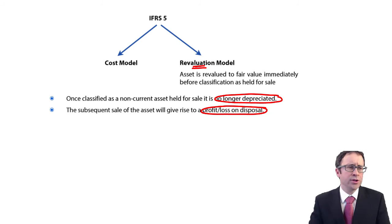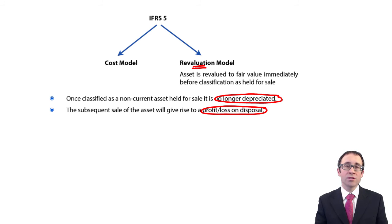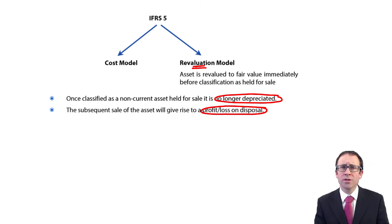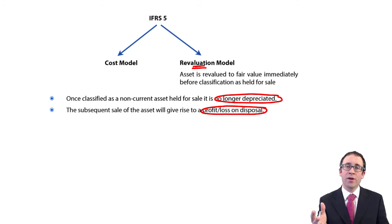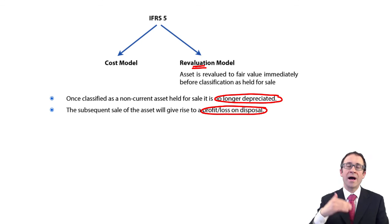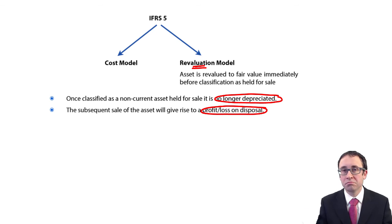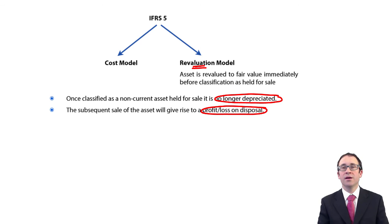That's the rules — nothing huge. To recap: value at the lower of carrying value and fair value less cost to sell; any reduction in value is an impairment; once classified as held for sale, stop depreciating; any subsequent sale gives a gain or loss on disposal. If using the revaluation model, revalue immediately prior to the transfer under IAS 16 and take any gains to other comprehensive income. Some of the numbers do get tricky, which we'll see in the examples that follow.